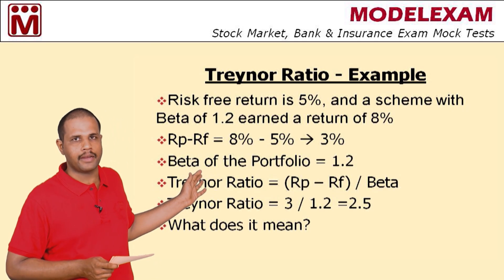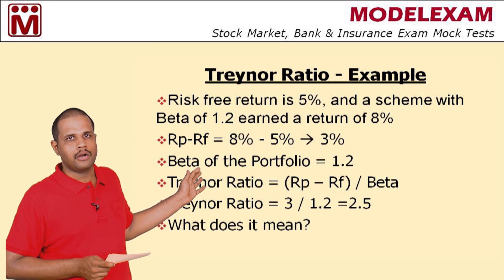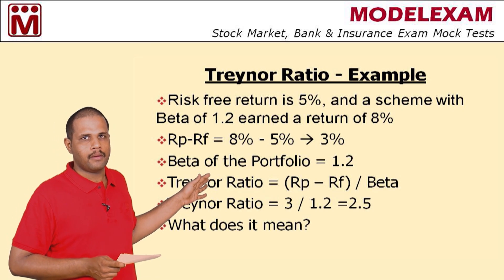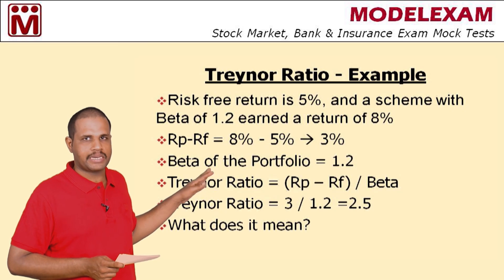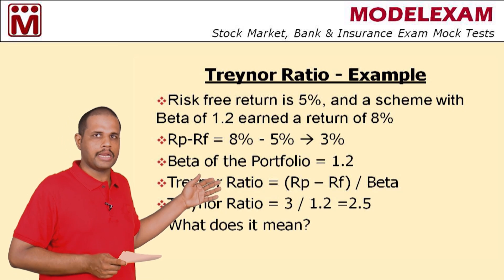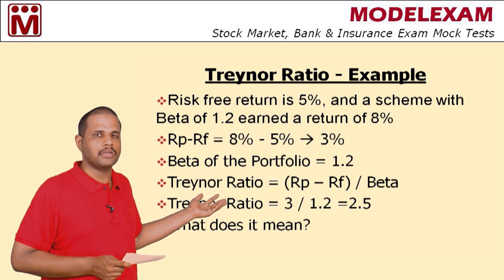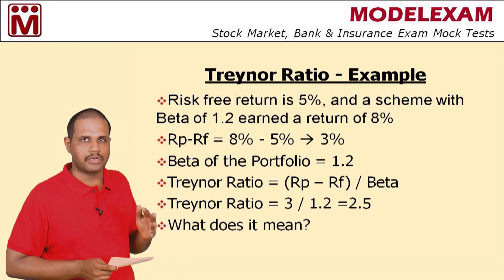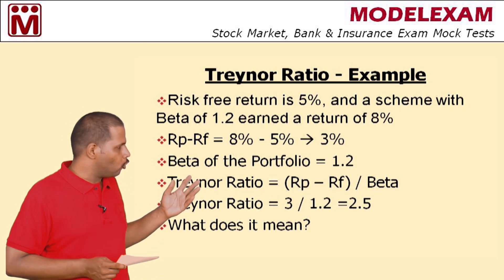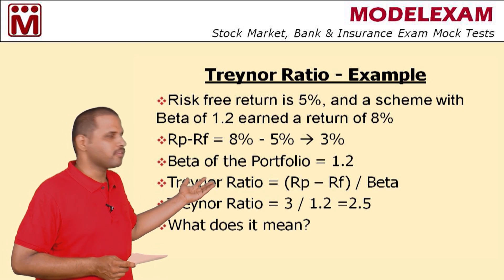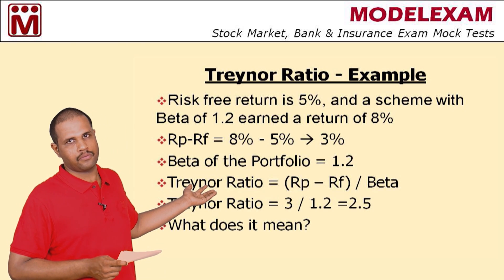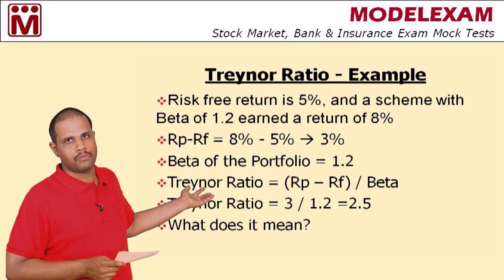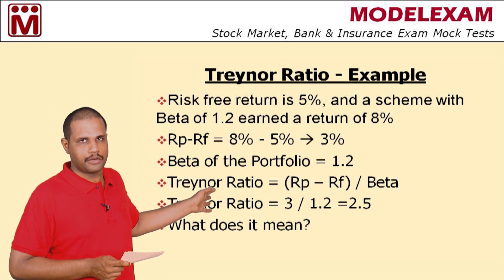Treynor ratio = Rp minus Rf divided by beta = 3% divided by 1.2 = 2.5. This means the scheme generates returns 2.5 times the market risk. This is the Treynor ratio.